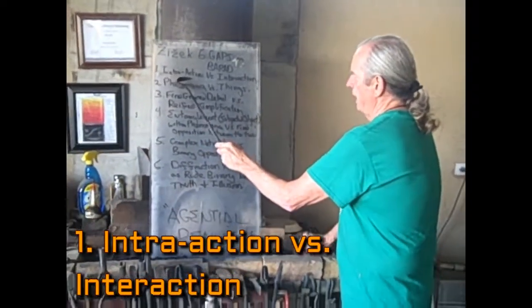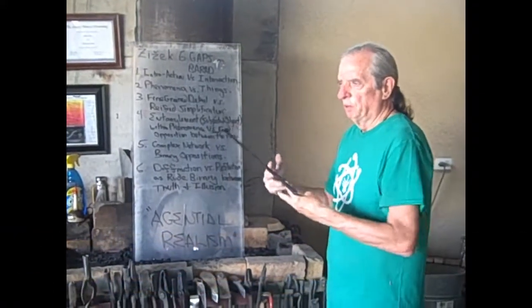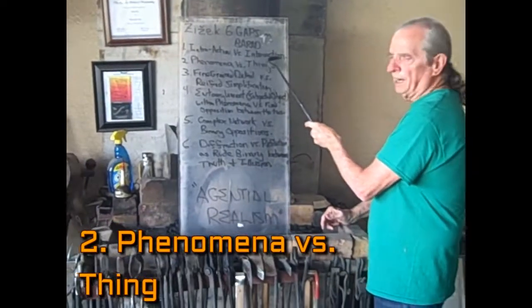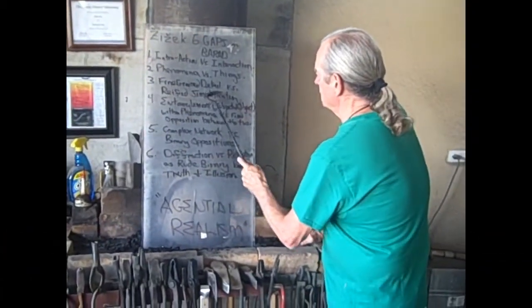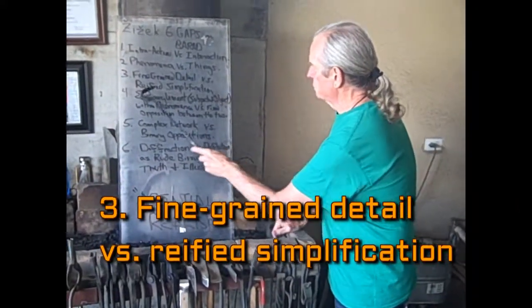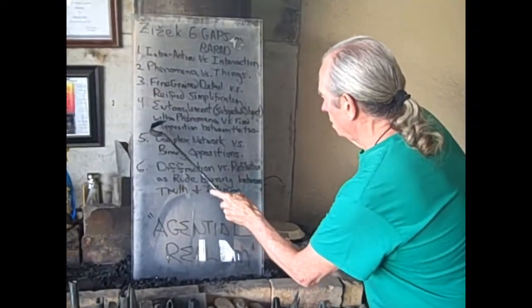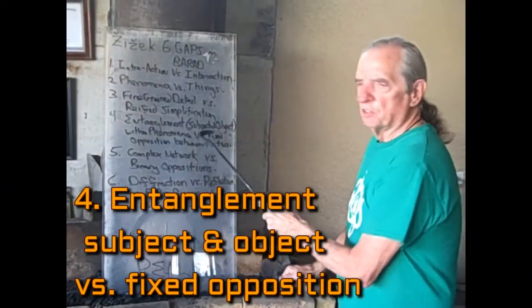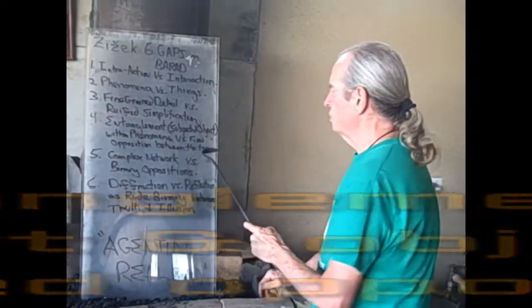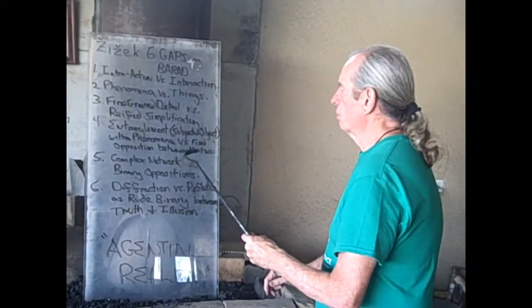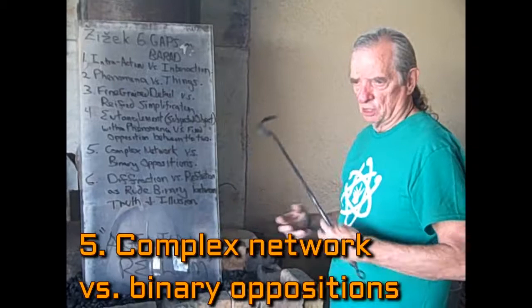The first gap is between intra-action — where, as Mabel was explaining, it's the internal inseparability of materiality and discourse. Second is phenomena versus things. Third is fine-grained detail, which Zizek really appreciates in Barad's work, versus a reified simplification when you get to post-humanism. Fourth is an entanglement of subject and object within the phenomenon itself, versus a fixed opposition between subject and object. Fifth is complex networks versus binary oppositions, such as the particle-wave.